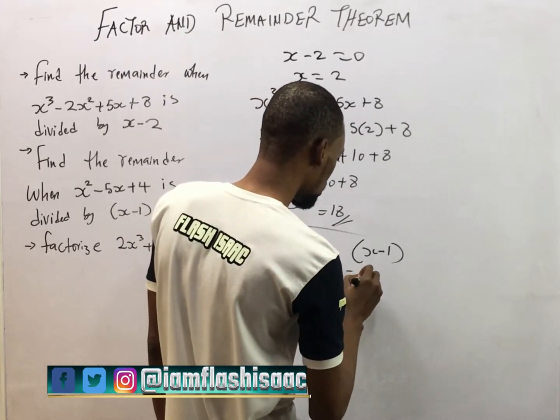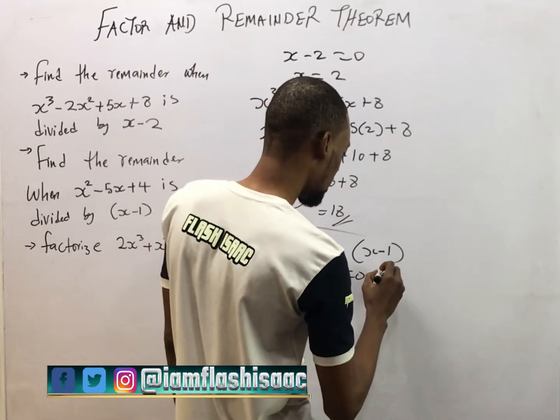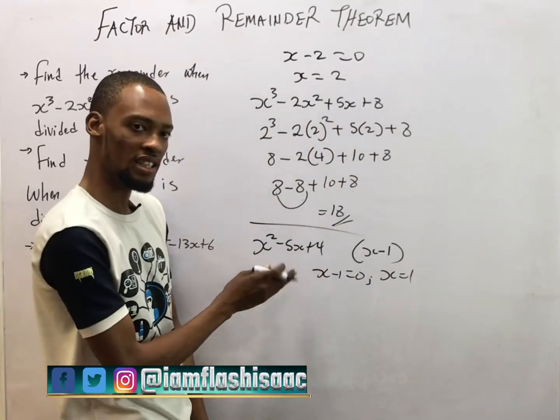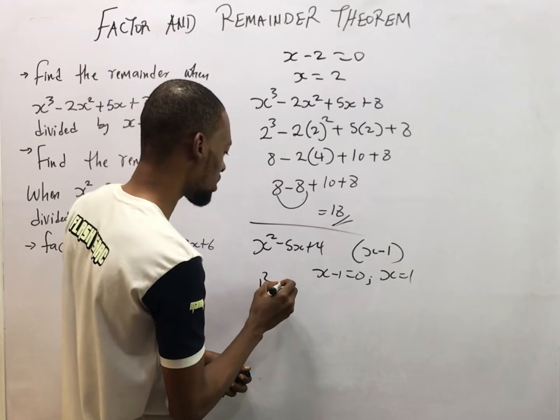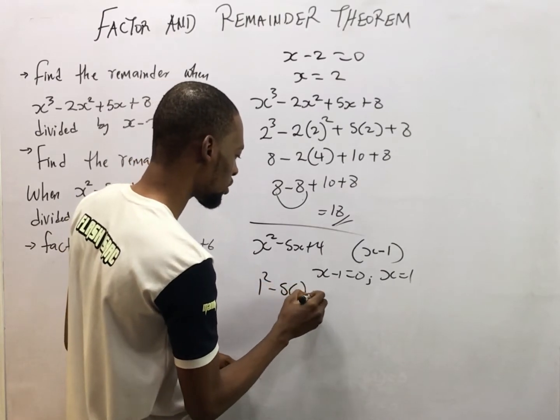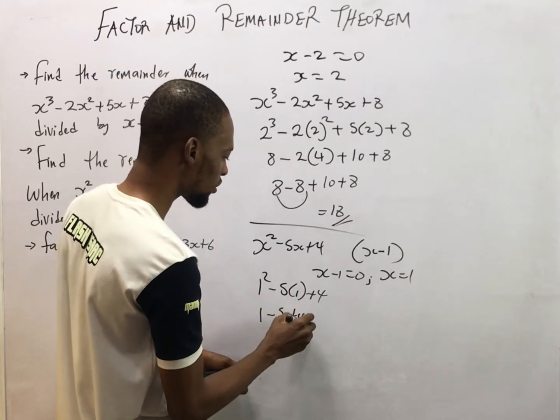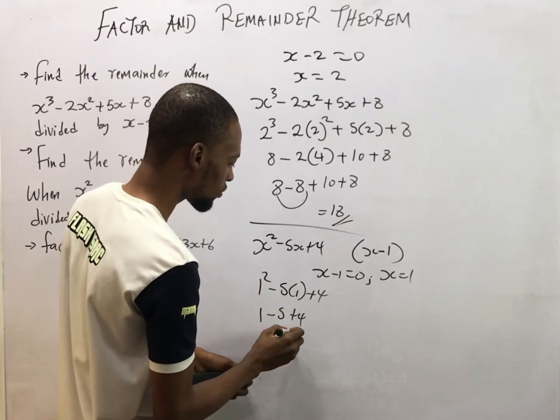So substitute 1 for S here to have 1 squared minus 5 times 1 plus 4, to give you 1 minus 5 plus 4. So this will give you 0.